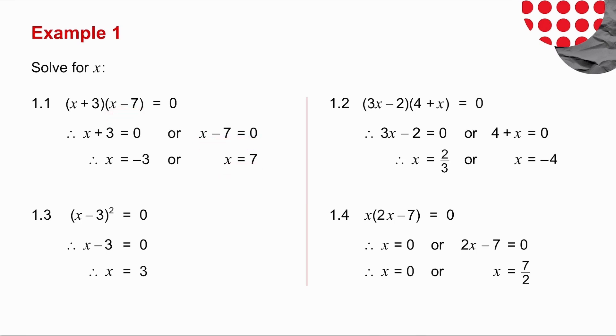In 1.2, the same thing. Two brackets multiply to give you 0, so either 3x minus 2 is 0, so x is 2 over 3, or 4 plus x is 0, so x is minus 4.